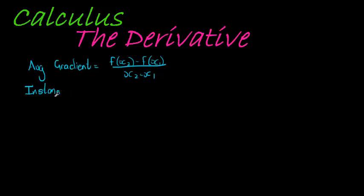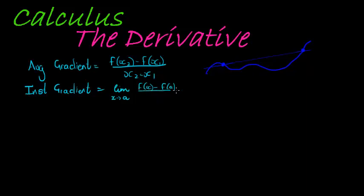That was the average gradient. Then we did the instantaneous gradient. The average gradient was when I take here's my curve, and the average gradient is the gradient of the straight line connecting those two points. Then we have the instantaneous gradient that is given by the limit when x tends to a of f(x) minus f(a) divided by x minus a.